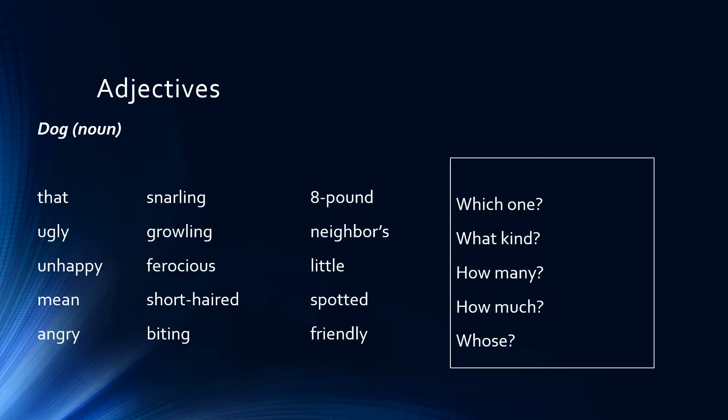We looked at the subject word 'dog,' which is a noun, and gave a list of certain adjectives: 'that dog,' 'snarling dog,' 'eight-pound dog.' All of these words are adjectives describing the noun 'dog.' They answer one of those questions: Which one? What kind? How many? How much? And whose?